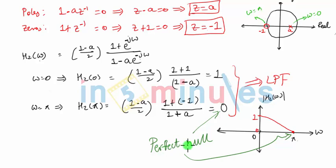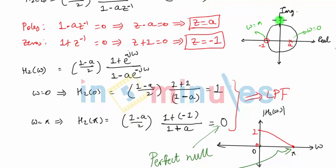If I want to convert this low pass filter to a high pass filter, one thing is clear: for a high pass filter I want perfect null or zero magnitude at the low frequency point which is omega equal to zero, and I want maximum magnitude at the high frequency point which is omega equal to pi.